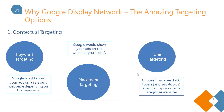The third type of contextual targeting is topic targeting. There are over 1,700 topics and subtopics specified by Google, and they have categorized websites based on these topics. If you don't specifically know which websites to target but know the kind of websites you want, you can choose those categories and Google will do the targeting for you. This can be a pretty good contextual targeting option.